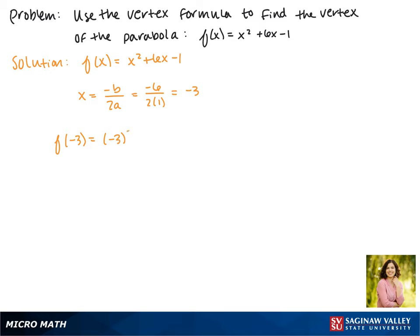So f(-3) = (-3)² + 6(-3) - 1. (-3)² is positive 9 and 6 times -3 is -18 minus 1. Now 9 - 18 is -9.